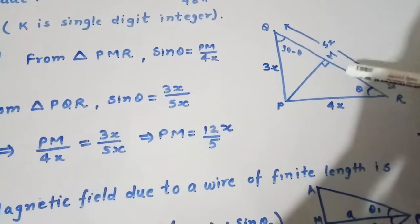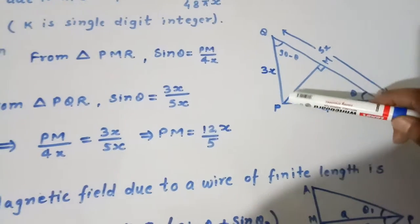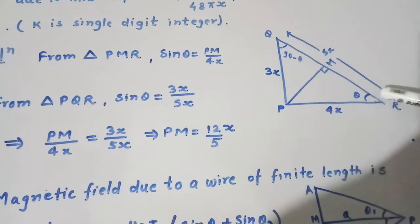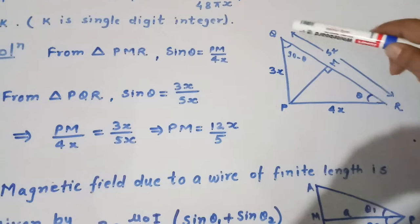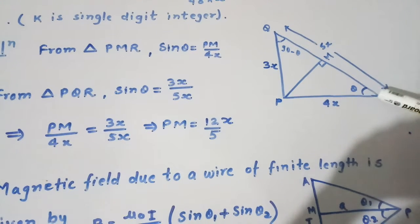So now there are two triangles we are considering: triangle PMR and we will try to find out sin θ, and also in triangle QPR we will try to find out sin θ.